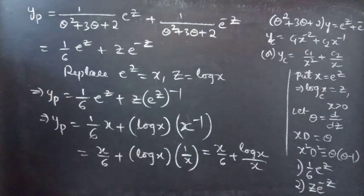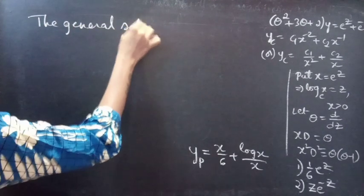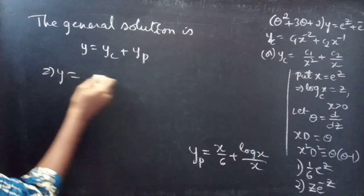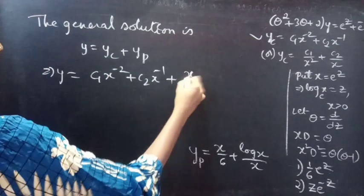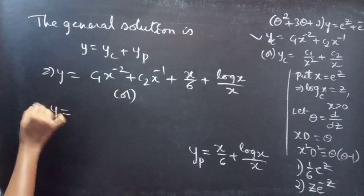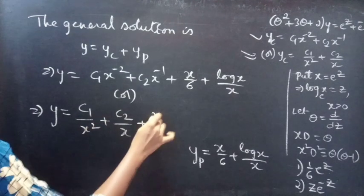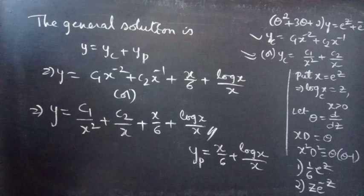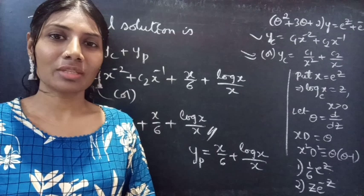We now have both yc and yp, so the general solution is y = yc + yp, giving: y = c1·x^(−2) + c2·x^(−1) + x/6 + log(x)/x, or equivalently y = c1/x² + c2/x + x/6 + log(x)/x. This completes the problem. We have solved a higher order linear differential equation with variable coefficients. Hope you understood — see you in the next video, bye-bye.